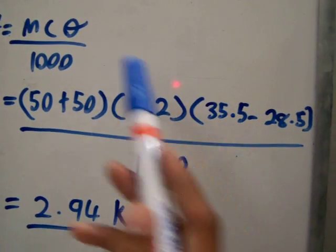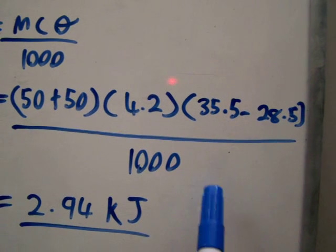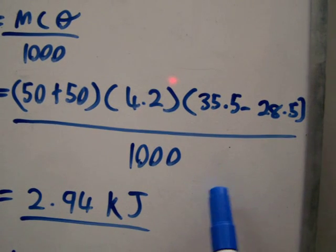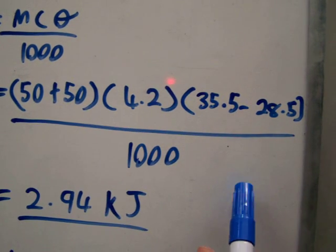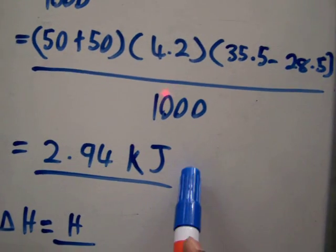C theta is 35.5 minus 28.5, which is the highest temperature of the mixture minus the average of the initial temperatures. Divide by 1000, you will get 2.94 kJ.